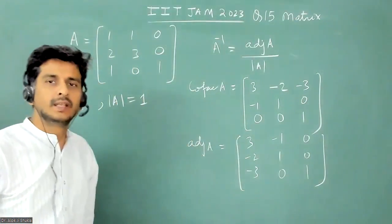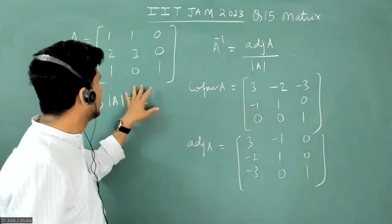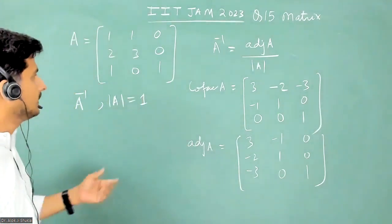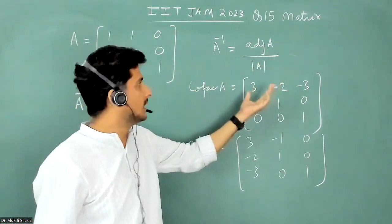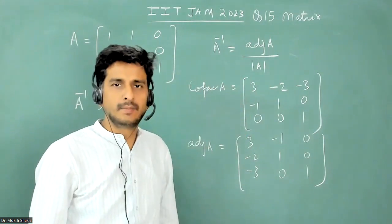The direct question is to calculate the inverse of the matrix, a 3×3 matrix. A inverse we know is adjoint A divided by determinant A.